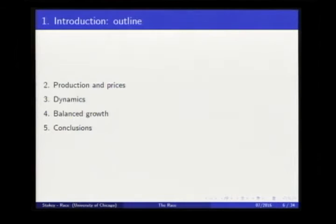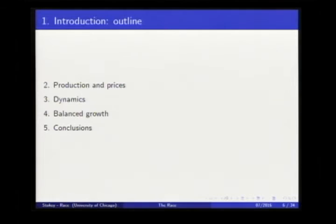The roadmap for the rest of the talk: first we'll look at the production and pricing setup — at each instant the economy solves a static allocation problem. Then we'll look at the dynamics. Then we'll focus on balanced growth paths and what determines the long-run growth rate. I welcome questions at any time. This is a brand new paper — the big race here was the race between me and the clock, trying to get results finished. If everything's not crystal clear, please feel free to ask questions.